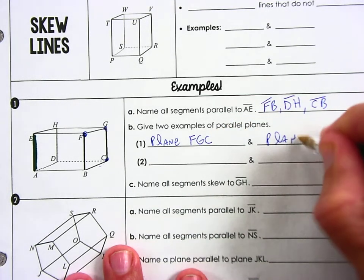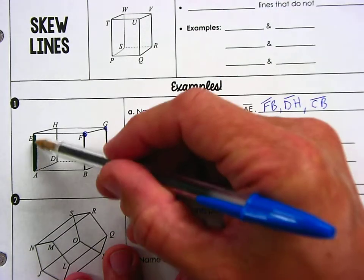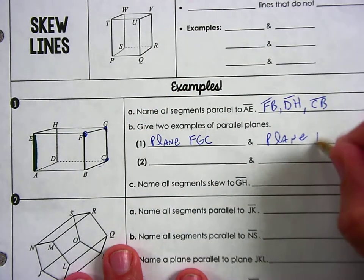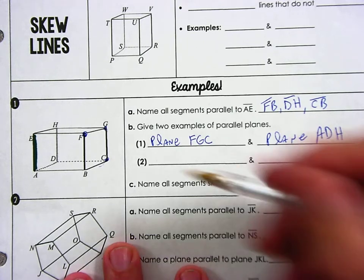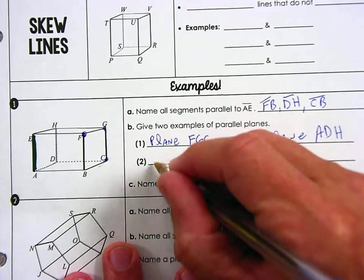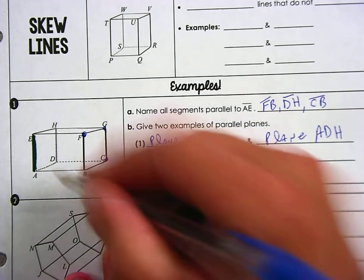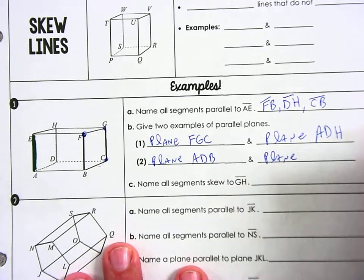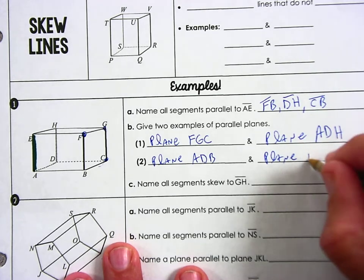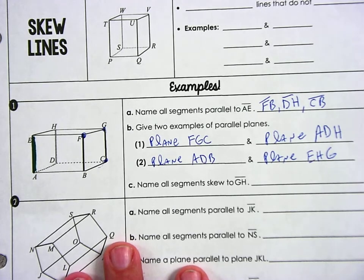So pick any three points or vertices on that one. So I'm just going to say ADH. Everybody's cool with that? Okay, excellent. All right, what was that? Oh, you want to do the bottom one? Okay, so this bottom floor right here, I heard someone say plane ADB. Okay, if we do the bottom panel, then you're going to grab the top panel. So plane and it looks like EHG. Okay, you have to name three points though in order to name those planes. Nice.